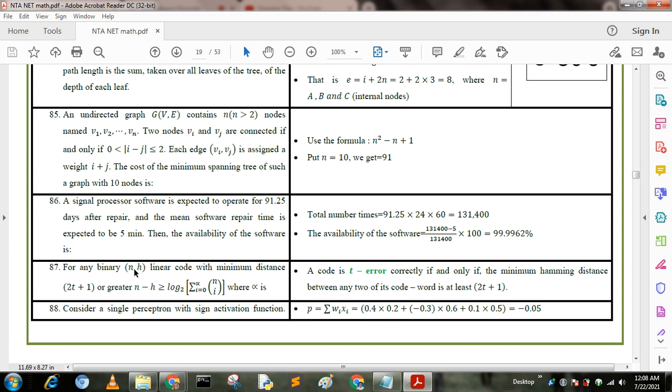Next question: for any binary linear code with minimum distance 2t plus 1 or greater, n minus k greater than or equal to log 2 summation of i equals 0 to t of nCi. The code is t error correcting if and only if the minimum distance between any two code words is at least 2t plus 1. This option is given in the question: 2t plus 1.